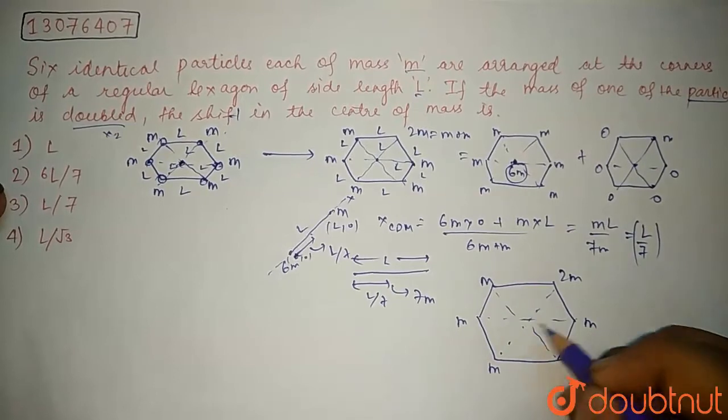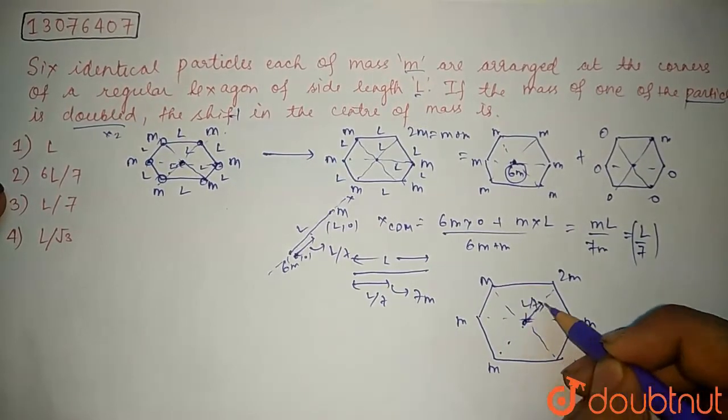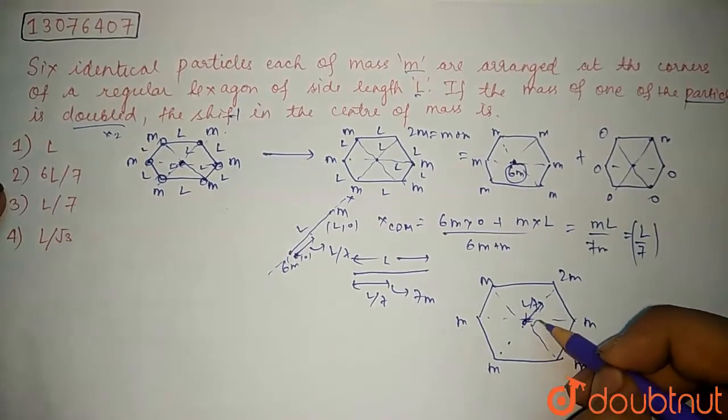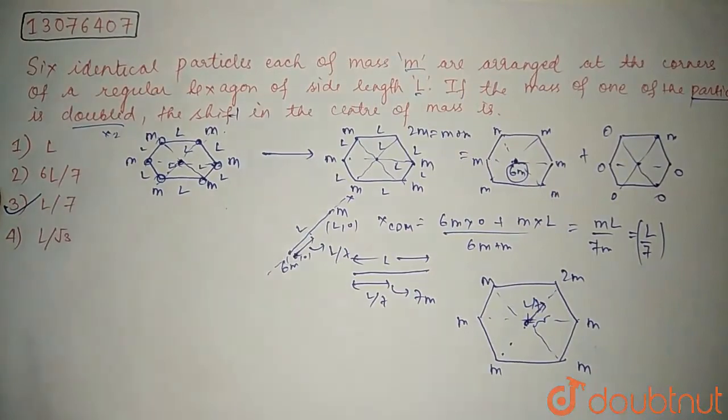This is the center of mass, and if its distance is here, the distance is L by 7. So the shift is how much? The shift is L by 7. The correct option is L by 7. Thank you.